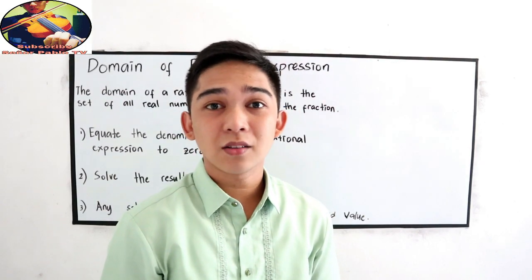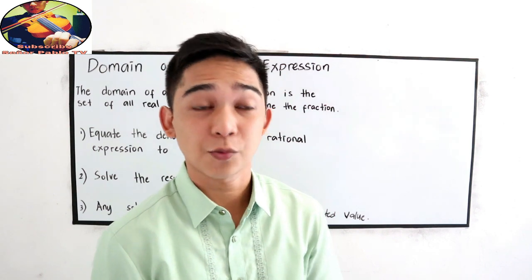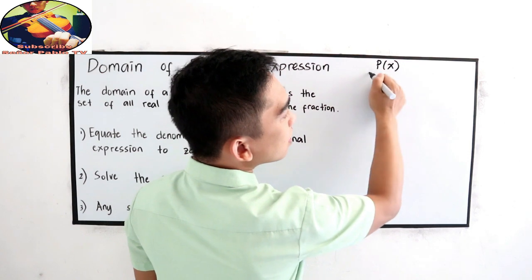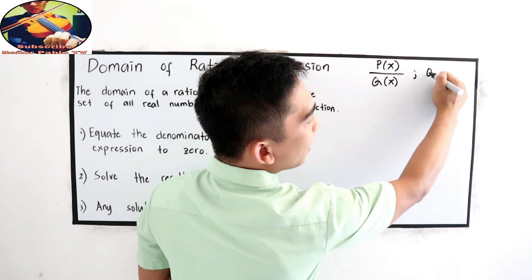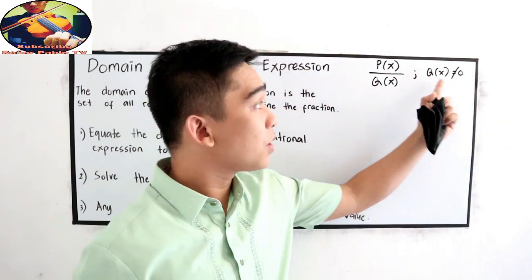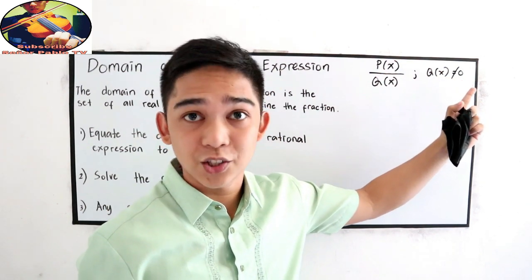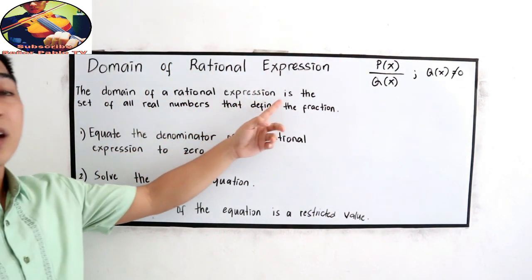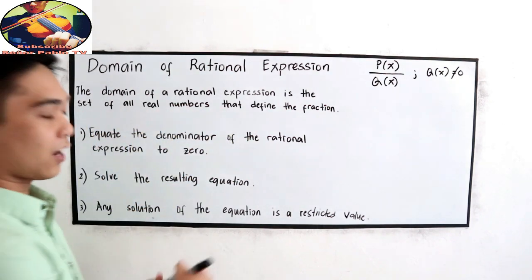In this video, you will learn about the domain of rational expressions. We know that a rational expression is an expression in the form P(X) over Q(X), wherein Q(X) must not be equal to zero. The domain of a rational expression is the set of all the real numbers that define the fraction.